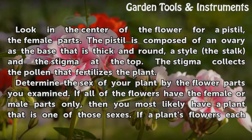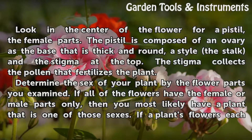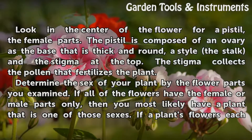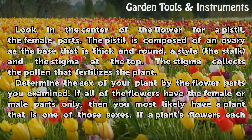Look in the center of the flower for a pistil, the female parts. The pistil is composed of an ovary at the base that is thick and round, a style which is the stalk, and the stigma at the top. The stigma collects the pollen that fertilizes the plant.